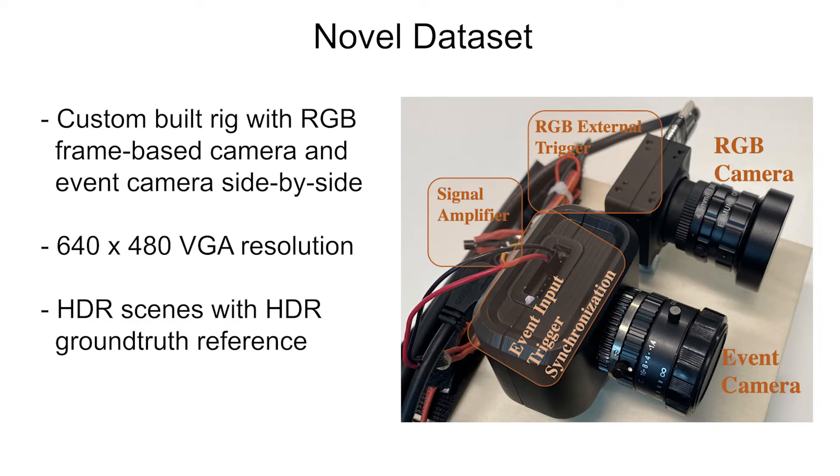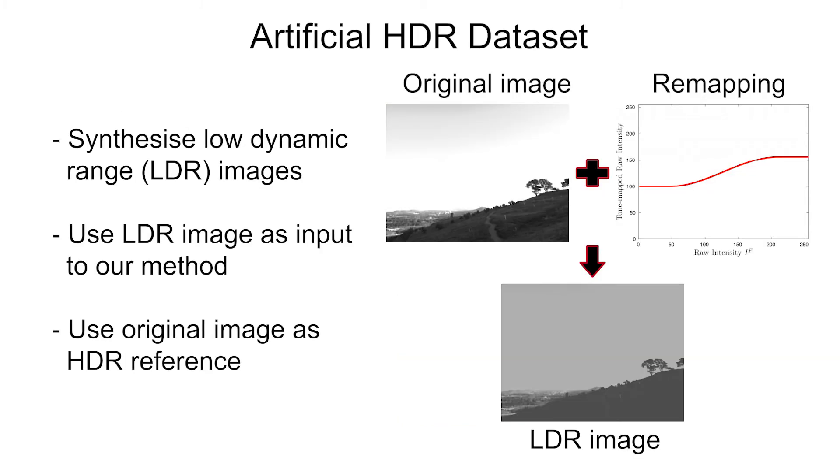In this paper, we present a novel hybrid event frame dataset, captured on a custom built rig with an RGB frame based camera next to an event camera. VGA resolution is available, and we provide high dynamic range ground truth reference video alongside image frames and events. In our artificial HDR sequences, we synthesize low dynamic range images to use as input to test our method and use the original image as ground truth.